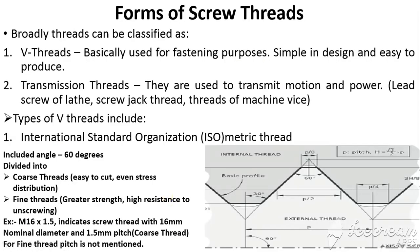The different forms of screw threads can be broadly classified into two types: V-threads and transmission threads. V-threads are used for fastening — to hold or clamp two parts in an assembly. They are simple in design and easy to produce. Transmission threads are mainly used to transmit power and motion, for example the lead screw of a lathe in thread cutting operations, a screw jack thread, and the thread of a machine vise used to transmit motion and power to clamp the workpiece.